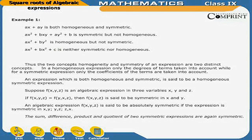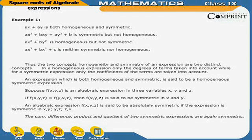Thus, homogeneity and symmetry of an expression are two distinct concepts. In a homogeneous expression, only the degrees of terms are taken into account, while for a symmetric expression only the coefficients of the terms are taken into account. An expression which is both homogeneous and symmetric is said to be a homogeneous symmetric expression.